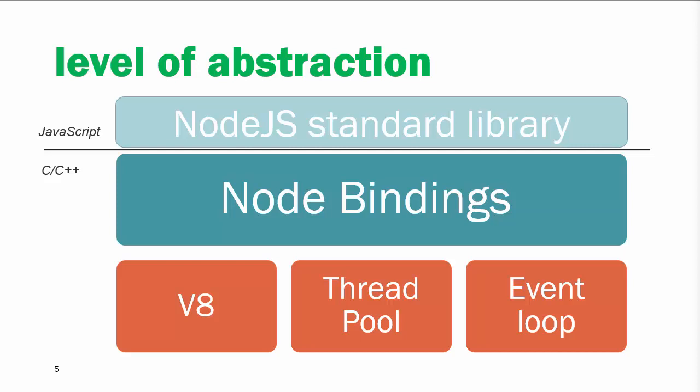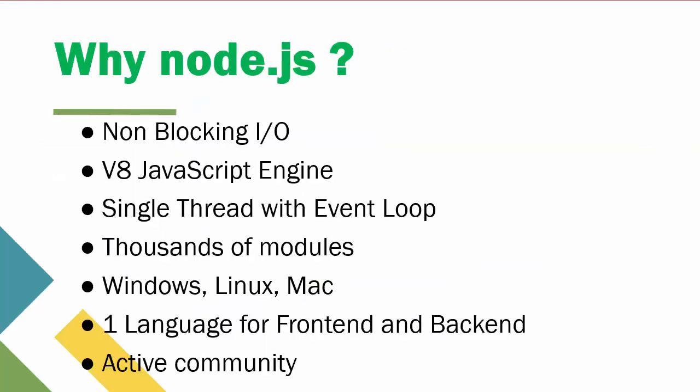If you want to write your own binding for your Node.js application, Node.js provides that capability. You can directly use C++ to bind your JavaScript code, writing your Node bindings in C or C++ and using them with the Node standard library.